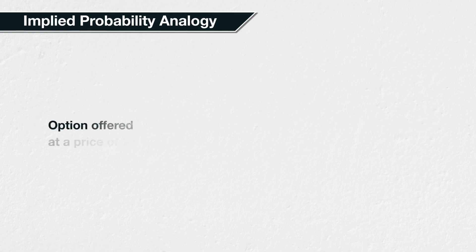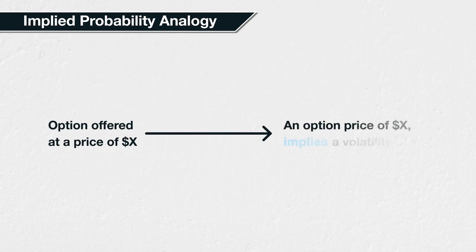In a similar way, if I offer to sell you an option contract, the price I offer it at implies a certain level of volatility. The future volatility of the asset may end up being different, but the price I'm offering the option contract at implies a certain amount of volatility, and it is this implied volatility that we discuss when we talk about option prices.